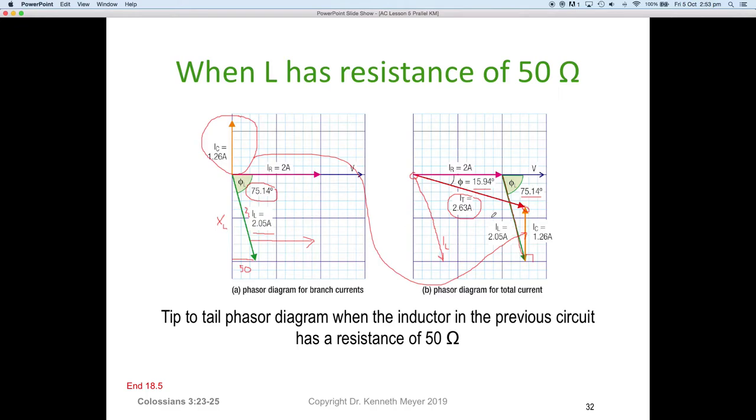We can then use that to find the overall impedance of the circuit. We tip-to-tail the phasor diagram with the inductor from the previous circuit with an internal resistance. That internal resistance caused that 50 ohms, that little bit of phase shift off the horizontal, pushing us out to that point to get our total current.